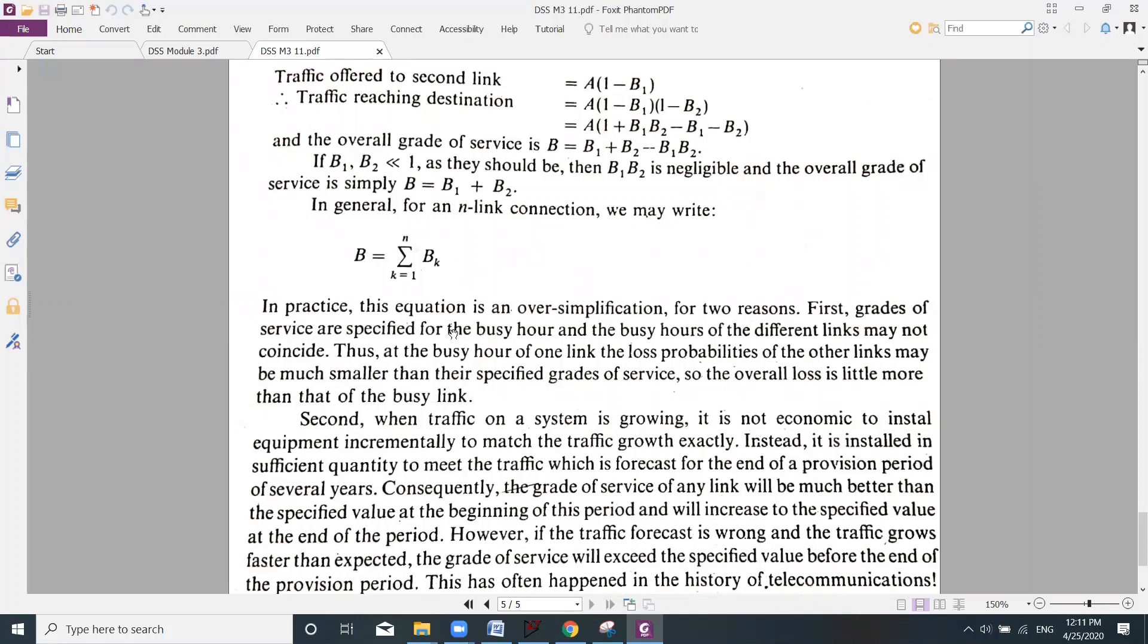What he is trying to say is, grade of service are specified for a busy hour, and the busy hours for different links may not coincide. In every link, busy hour at the same time, there is no guarantee. Thus, at the busy hour of one link, the loss probability of the other links may be much smaller than the specified grade of service. So the overall loss is little more than the busy link. This is the first reason.